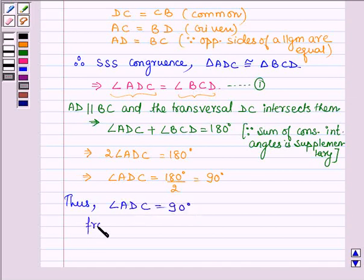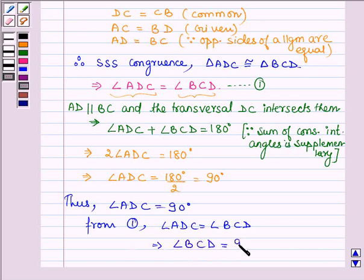Now from equation 1, angle ADC equals angle BCD, so this implies angle BCD is also equal to 90 degrees.